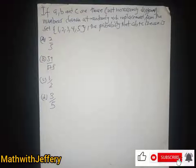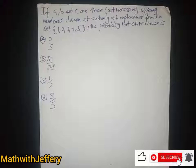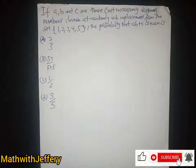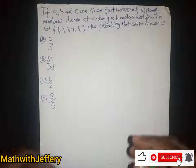Hello students, welcome once again to another section. In this section we have a question: if a, b, and c are three not necessarily different numbers chosen at random with replacement from the set {1, 2, 3, 4, 5}, we should find the probability that a plus b is even.